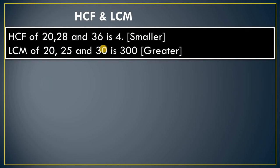HCF and LCM. We discuss first how you will get to know whether you have to apply Highest Common Factor or Least Common Multiple. In the HCF case, suppose you get the numbers 20, 28, and 36 — their HCF is 4, meaning their greatest common factor is 4. Whatever answer you get in HCF, that number will be smaller.